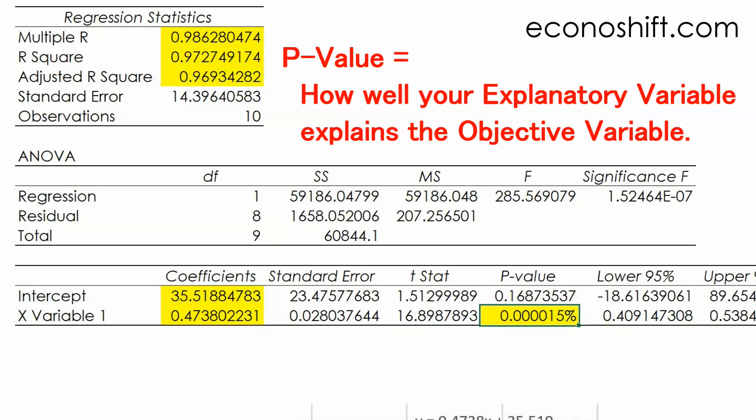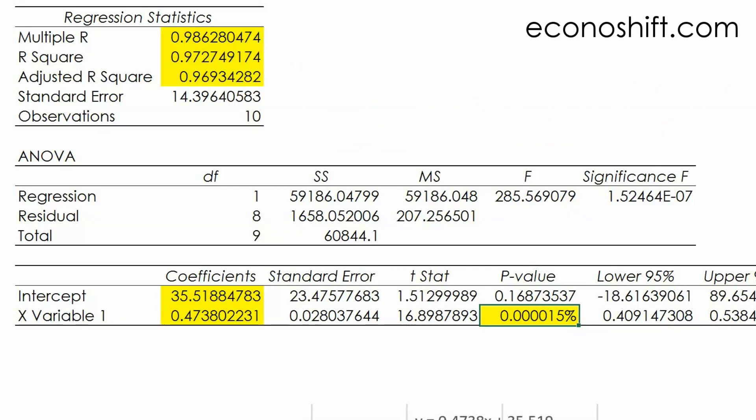It's 0.000015%. This p-value is a numerical value which we cannot get from the scatter plot. Simply speaking, you can see how well your explanatory variable explains the objective variable.